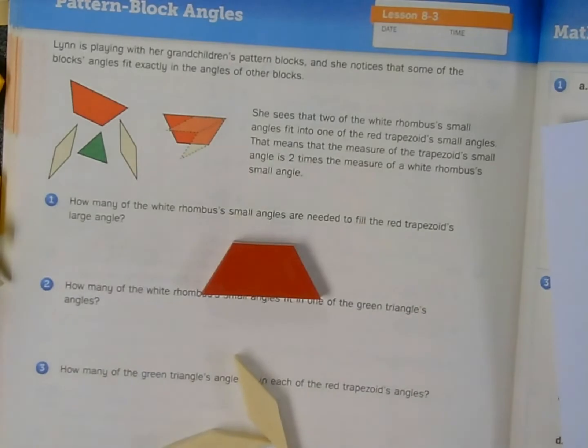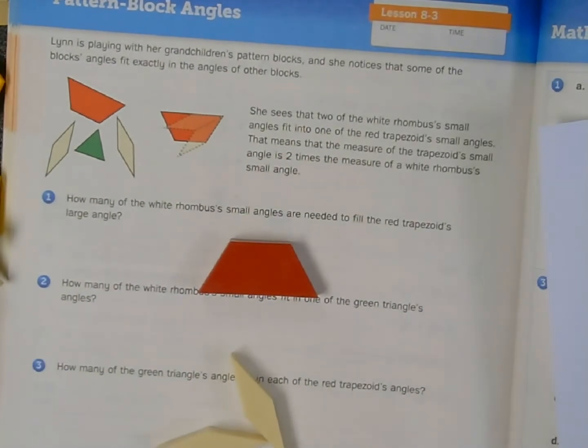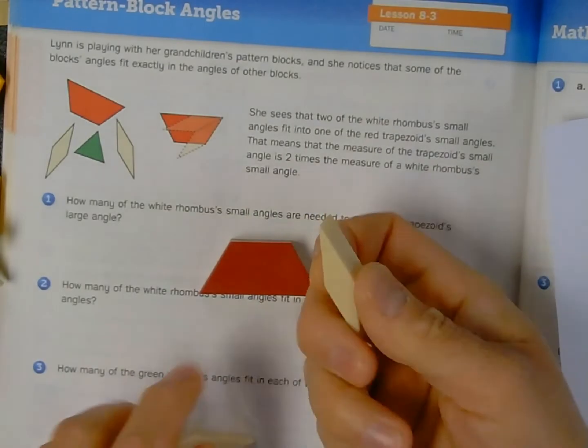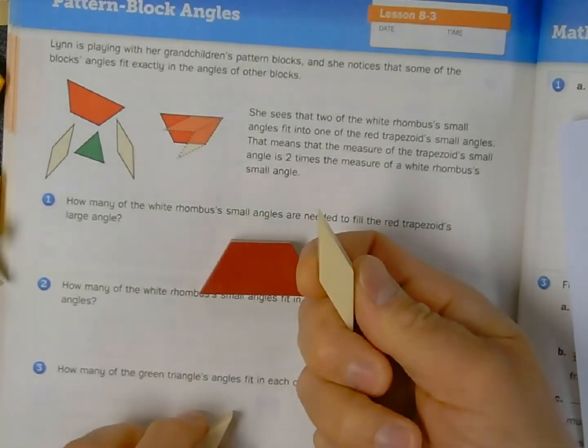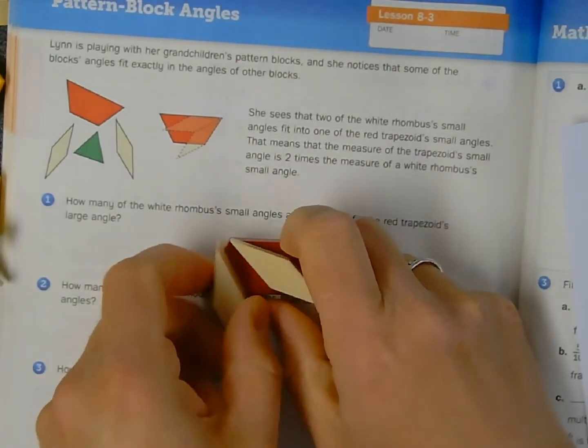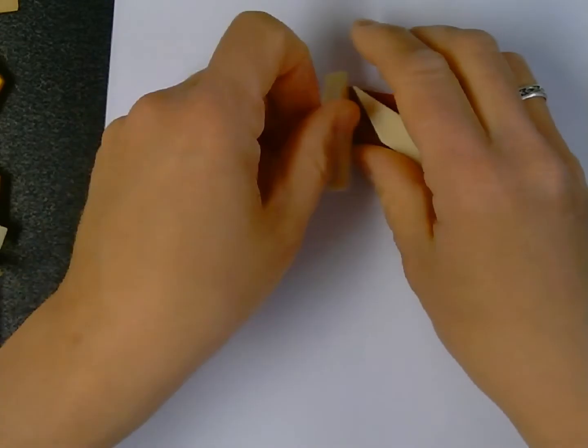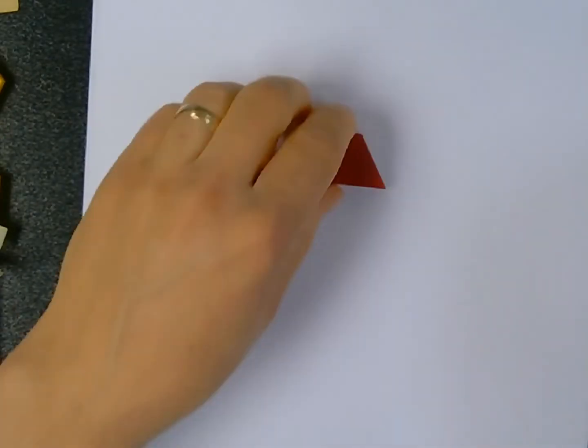These angles, by contrast, are, say it with me, obtuse. So I need to know how many of these really acute rhombus angles can fit in this space. Now, I'm going to use a piece of paper to help me, because balancing a bunch of shapes on top of each other might be a little difficult.